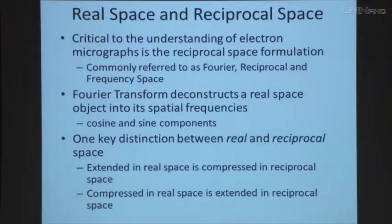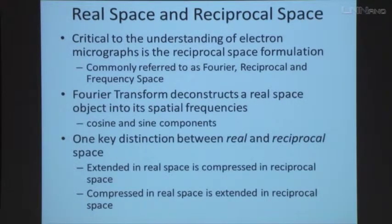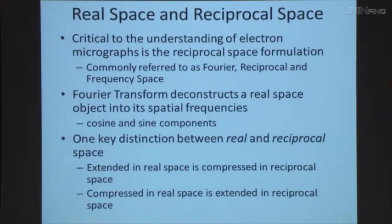Real space and reciprocal space is a really important concept, one of the most important in TEM and in physics in general. It's commonly referred to as Fourier, reciprocal, and frequency space — all three mean the same thing. You take the Fourier transform and it deconstructs a real space object into its spatial frequencies — it turns it into sine and cosine components. By looking at a two-dimensional representation, which you use very commonly in TEM by just pressing the FFT button, you can see very different things in real space versus FFT space and get an idea of where the information is coming from. One key distinction between real and reciprocal space is that extended objects in real space will look like compressed objects in reciprocal space, and if it's compressed in real space it will be very extended in reciprocal space.